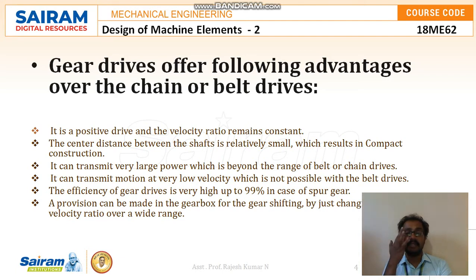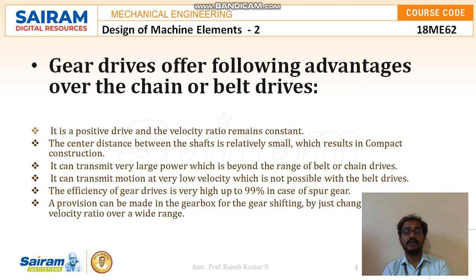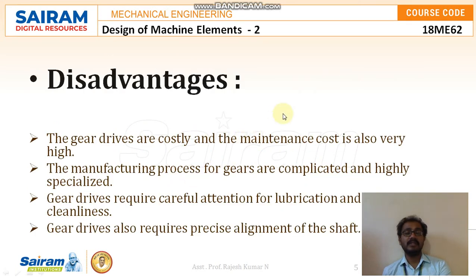Gear drives can transmit motion at very low velocity, which is not at all possible with belt drives. And very importantly, the efficiency of gear drives is very high — up to 99% in the case of a spur gear. A provision can also be made in the gearbox for gear shifting by just changing the velocity ratio over a wide range.